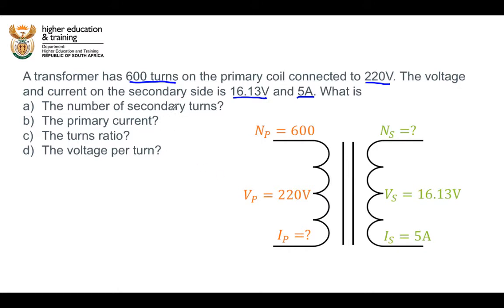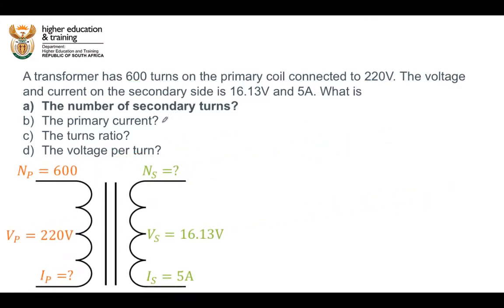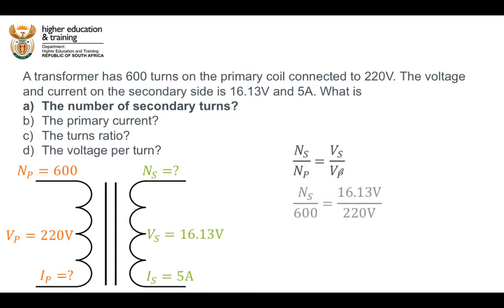Let's start by having a look at part A — we need to find the number of turns. We're going to use our transformer equation: the number of turns in the secondary divided by the number of turns in the primary is equal to the voltage across the secondary divided by the voltage across the primary. Plugging in the values, the number of turns in the secondary divided by 600 is equal to 16.13 volts divided by 220 volts.